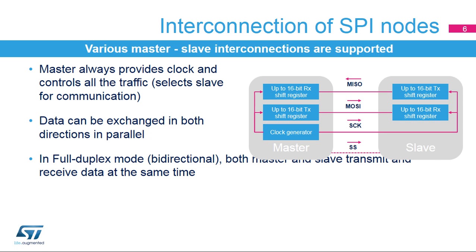The master can select the slave it wants to communicate with through the optional slave select or SS signal. Data stored in the dedicated shift registers can be exchanged synchronously between the master and slave through the MOSI (master output, slave input) and the MISO (master input, slave output) data lines.